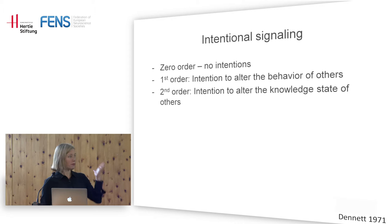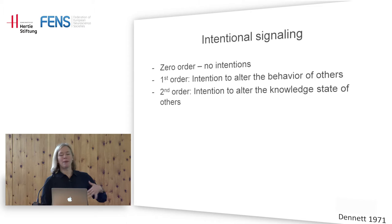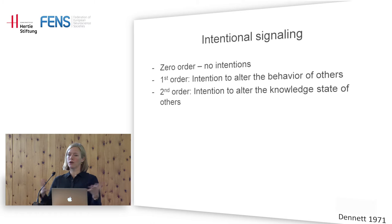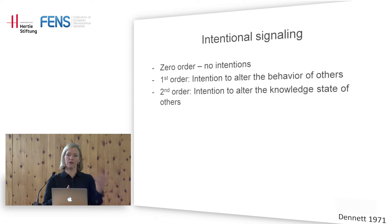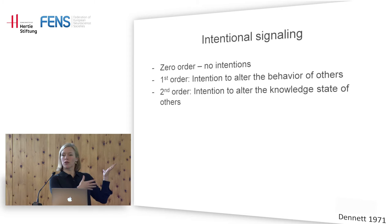Dennett's scheme is relatively helpful to sort through the different cases. We can have simple expressions of emotions — for instance, I can make a disgust face when nobody's in the room, after touching something slimy. That has no first- or second-order intentionality; it's just an expression of my emotional state. That would be zero order.